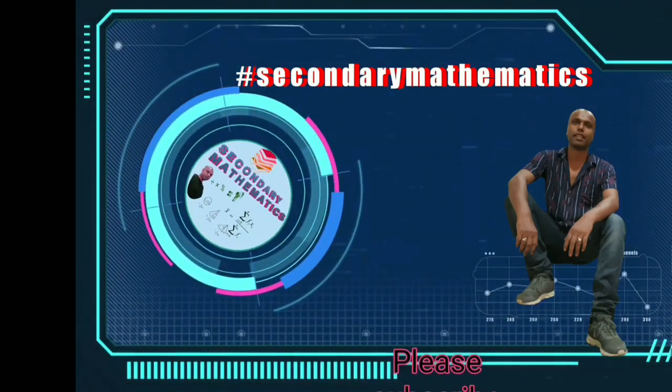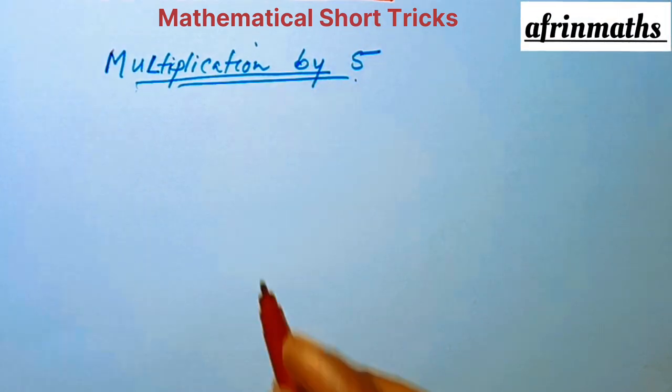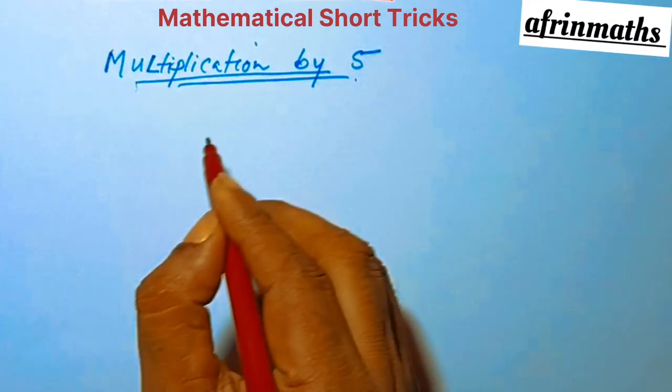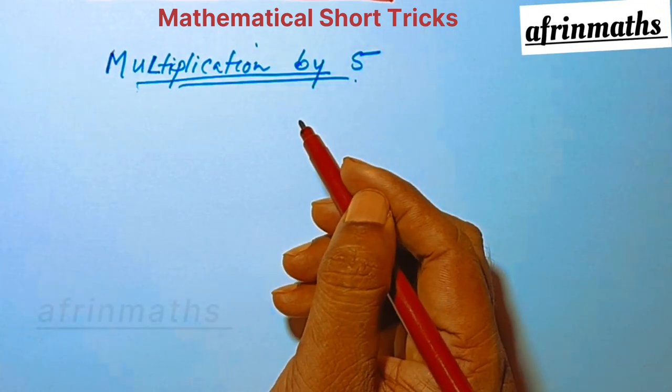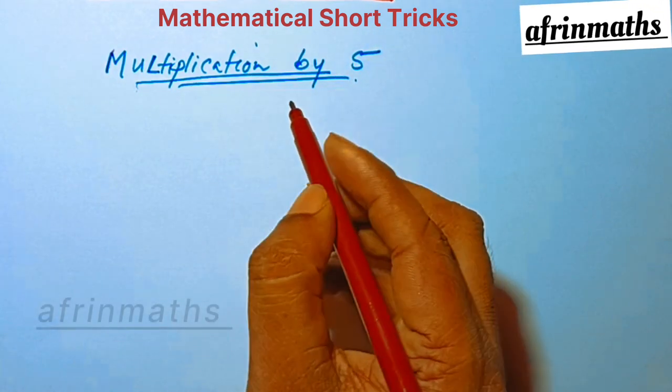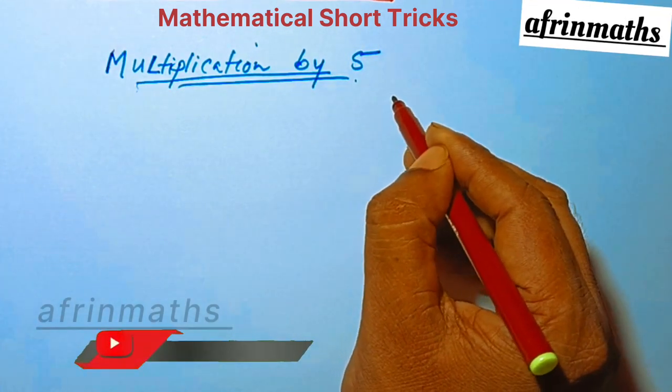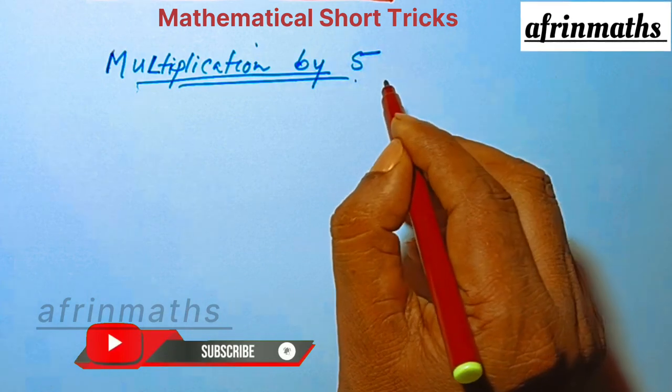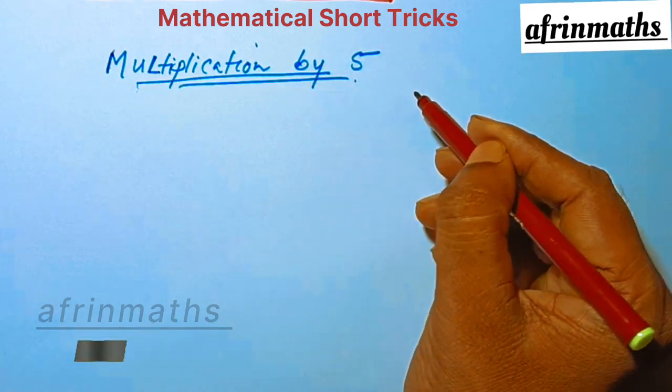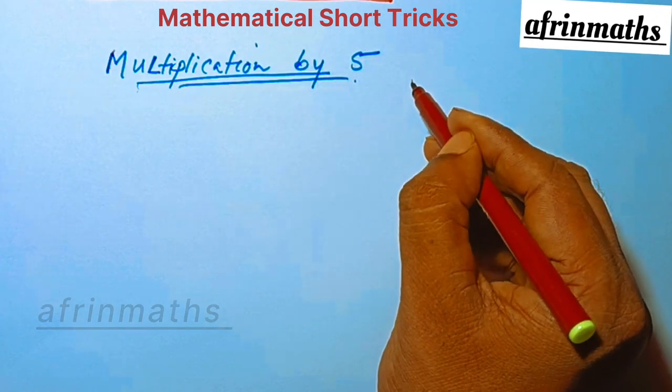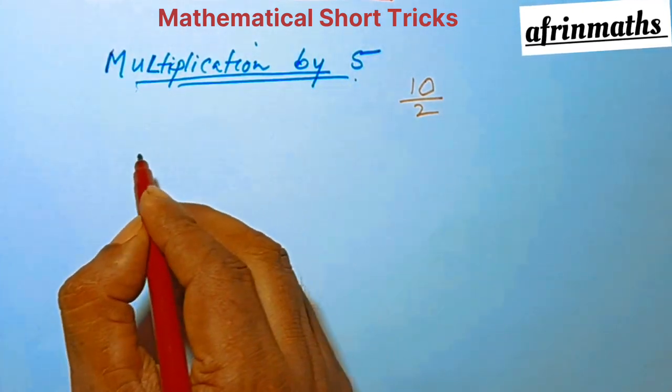Today we are going to learn how to multiply. In this mathematical trick, we will learn how to multiply by 5. To multiply any number by 5, instead of multiplying by 5, we will multiply by 10 divided by 2. Let us take an example.